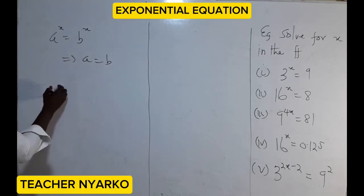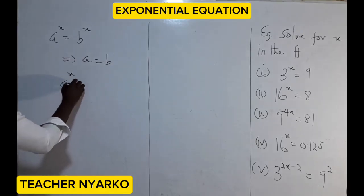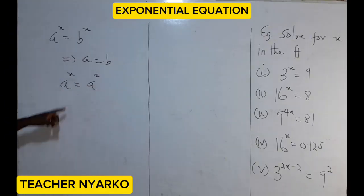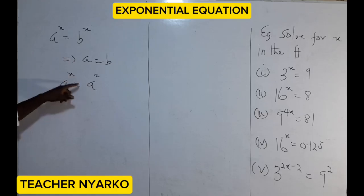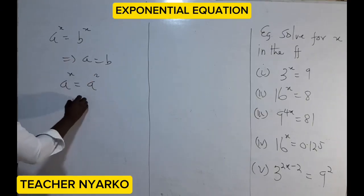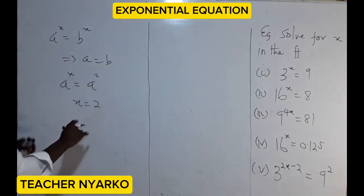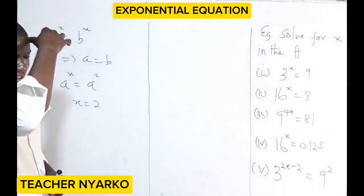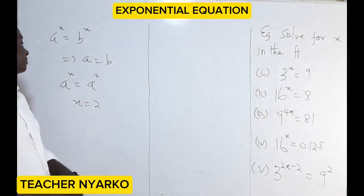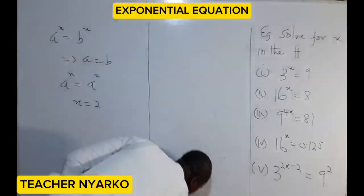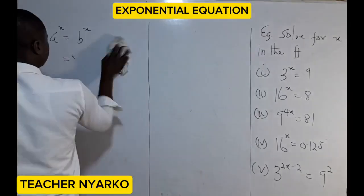If we have a exponent x equals a exponent 2, the base here is a with exponent x, and the base here is a with exponent 2. The bases are the same, so we can equate the exponents, meaning x equals 2. That's the general idea. An exponential equation is any equation involving an unknown quantity that we will find at the end of the day.